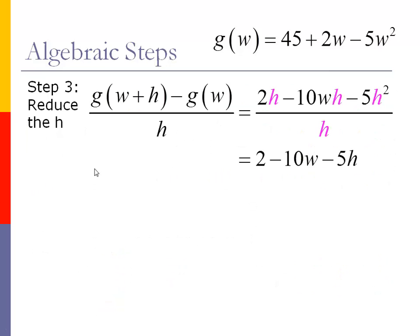So step number three, we're going to reduce the h. So we put it in the numerator, what we got from the previous slide, and now we're noticing, hey, everybody's got an h. So we can reduce out the h. Because the last term up here in the numerator has an h squared, we're going to end up with still having an h for that piece. But the other two pieces, we're going to end up with a 2 minus 10w.